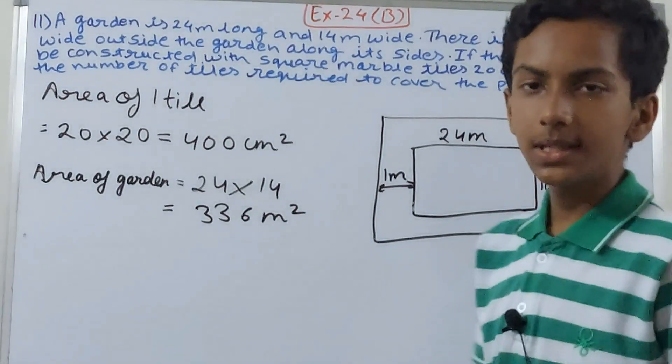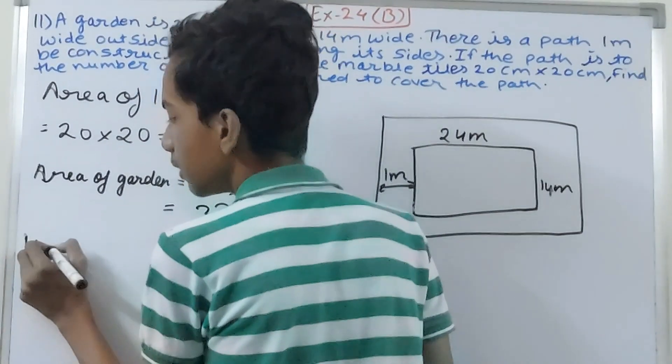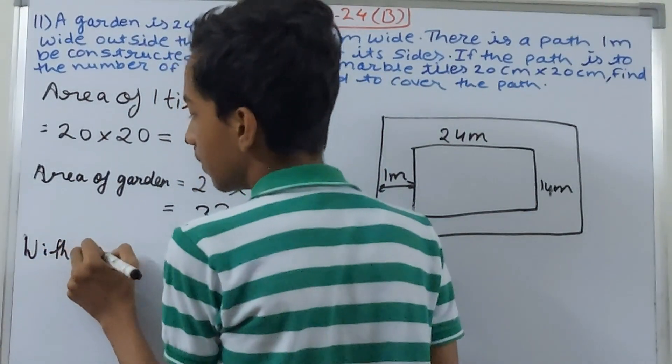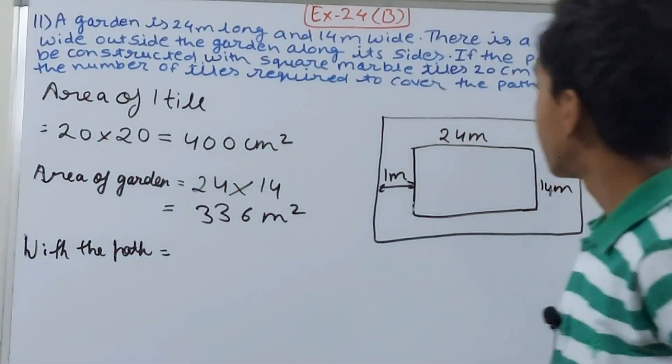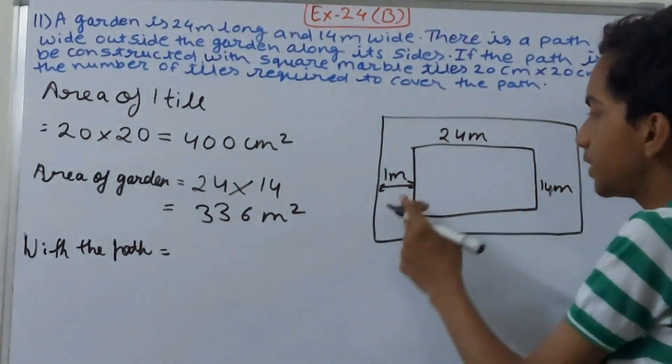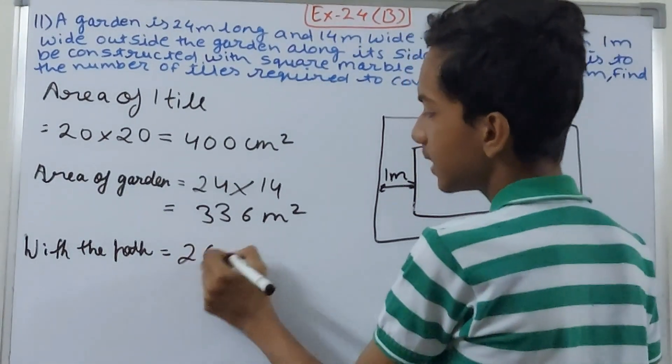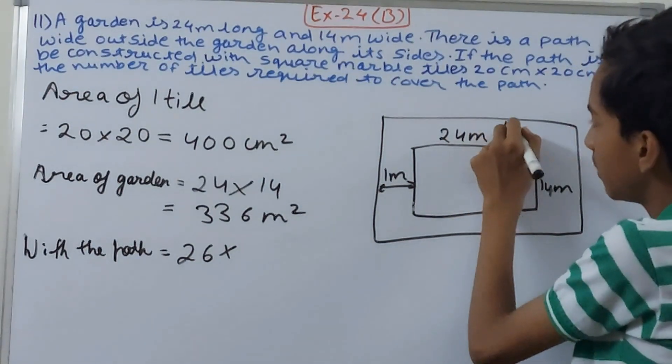Now next we have to find the area of the garden with the area of the path as well. With the path, 24 changes to plus 2 from each side, so 24 becomes 26, and 14 becomes 14 plus 2...